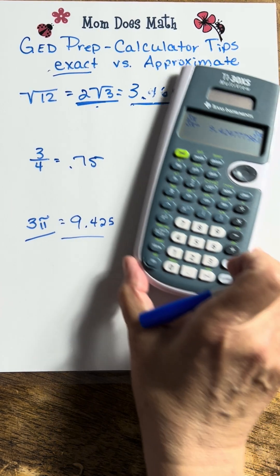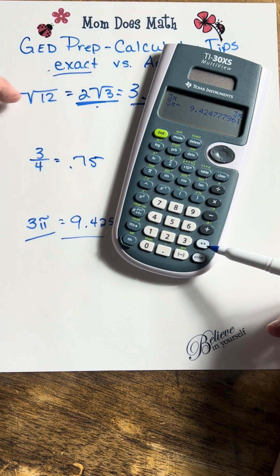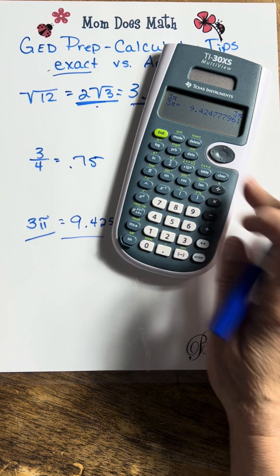So this is the button right here that we're talking about, and it changes exact answers into decimals.